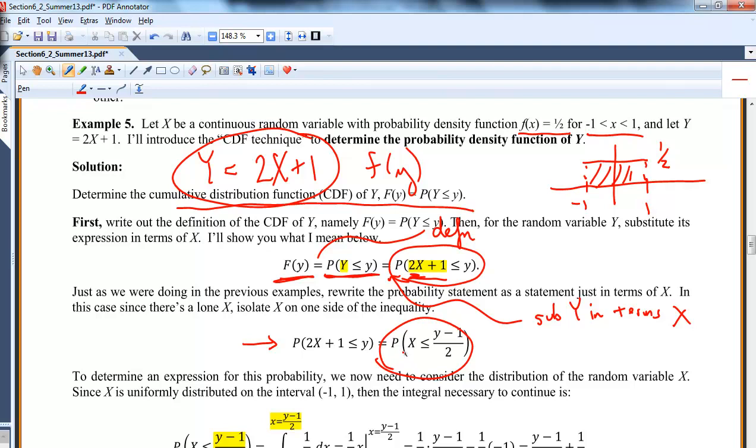Now remember, x is defined on the interval negative 1 to 1. And now I want to integrate x with this being its upper bound. So I'm going to integrate from negative 1 up to the upper bound of y minus 1 divided by 2.